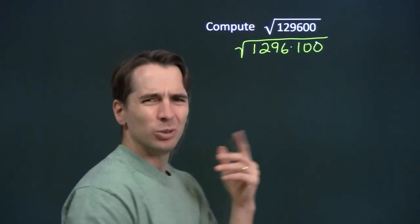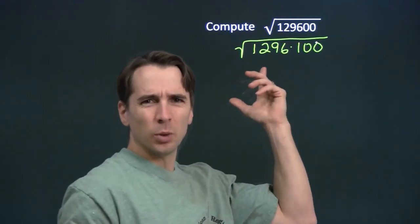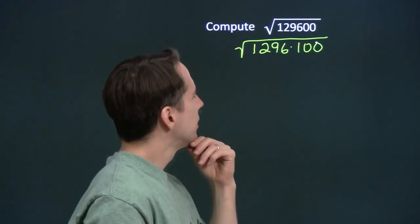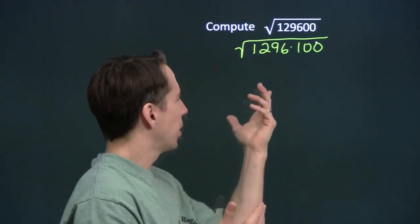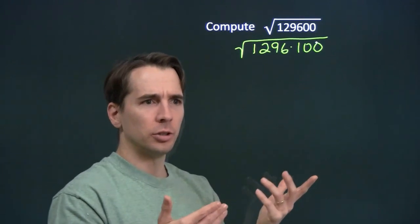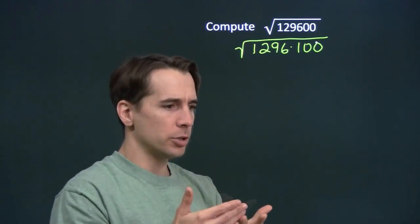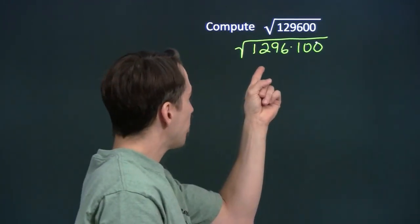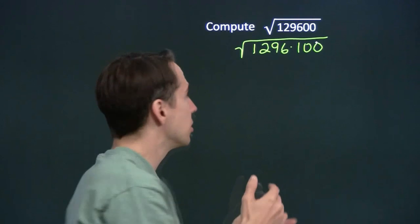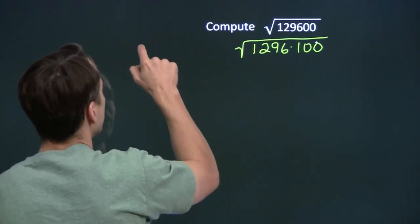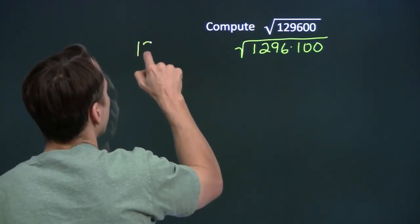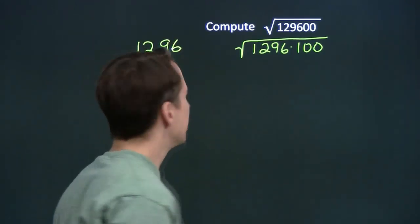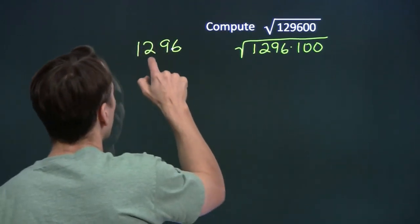I don't know what number we square to get 1296. We've got a product of integers and powers, so we should try prime factorization. Let's try the prime factorization of 1296, and maybe we can use that to figure out what 1296 is the square of.